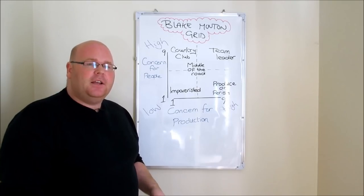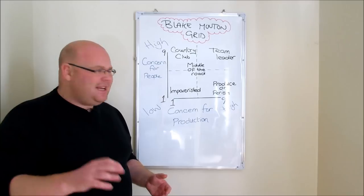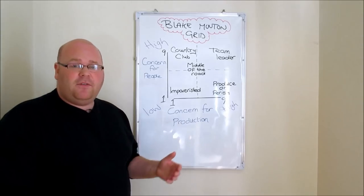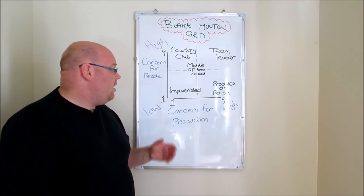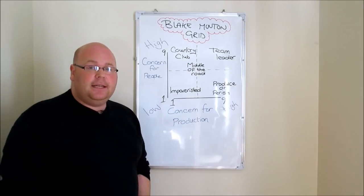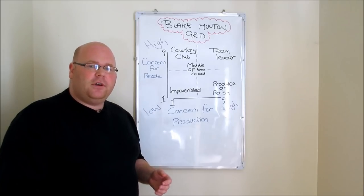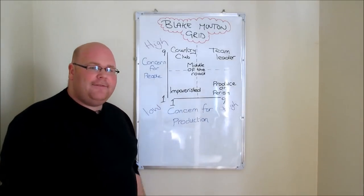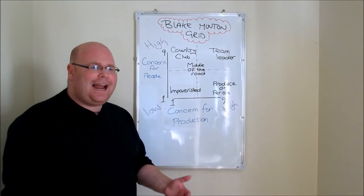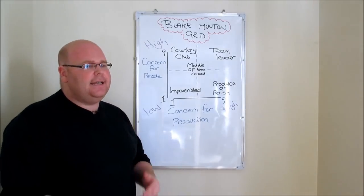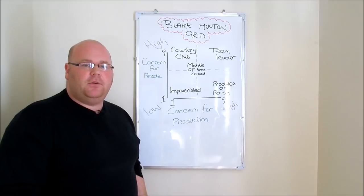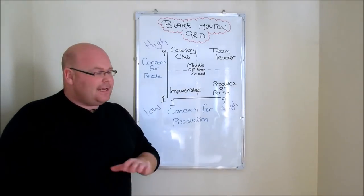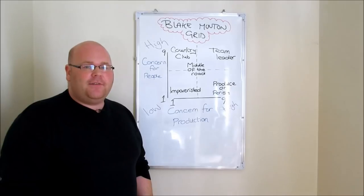That really sums up the Blake Mouton Grid, which sets out five different classifications of leadership style. We have undesirable styles like the impoverished style, and the most desirable like the team leader style. What's interesting about the Blake Mouton Grid is that it sets out two characteristics that separate different managers: how highly they value concern for production — productivity and output — and how highly they consider concern for people — their welfare, well-being, and motivation. A key exam topic that absolutely has to be revised.